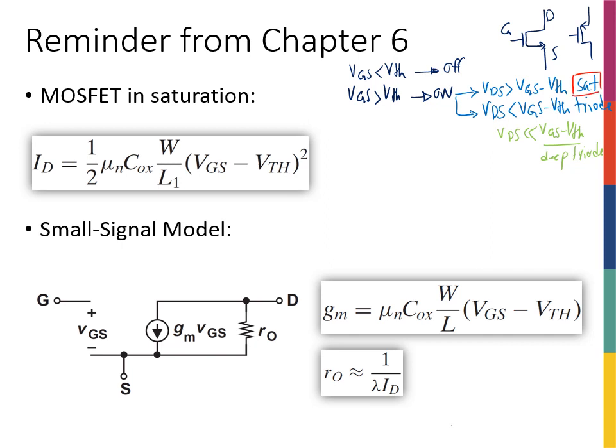We looked at the current relationship, the ID, the expression for ID for all of these different situations. For off, it's just ID equals zero.